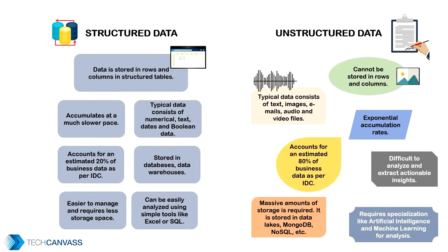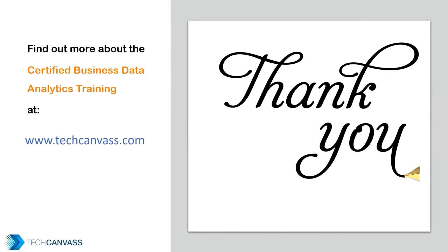To give you visual clarity, you can see how the left side has well-arranged, fixed-format tiles — this is structured data. On the right, the tiles' shape, size, and arrangement have no particular format, representing unstructured data. I hope you can now confidently identify the differences between structured and unstructured data. You can find out more about IIBA's certified data analytics training, which deals with business data analytics, at techcanvas.com.